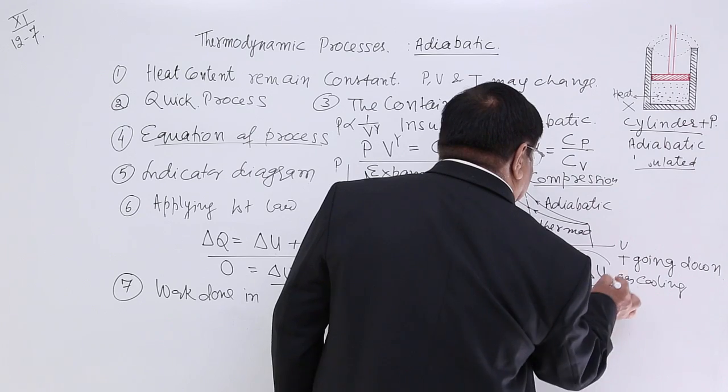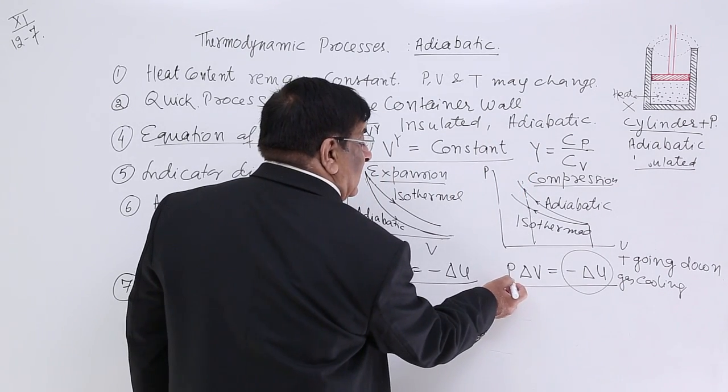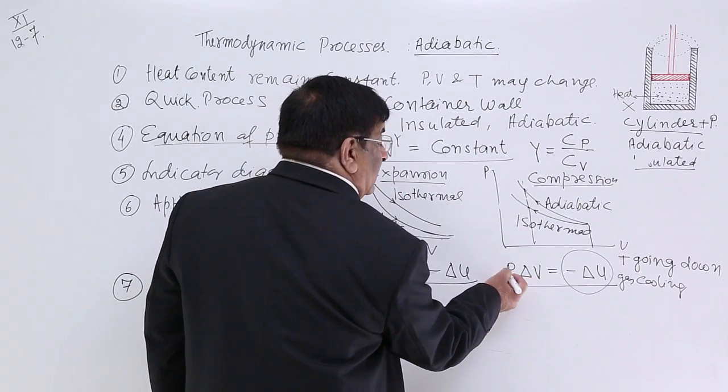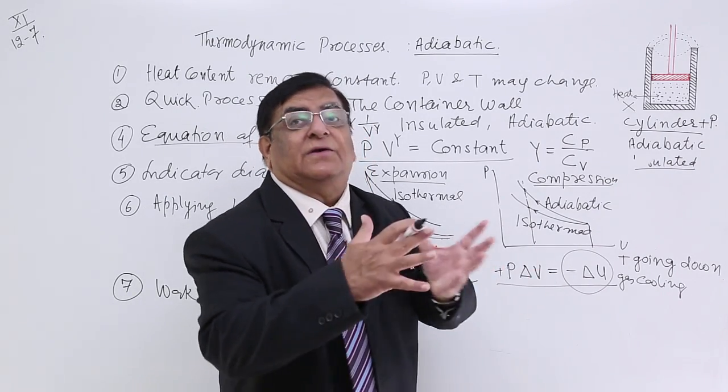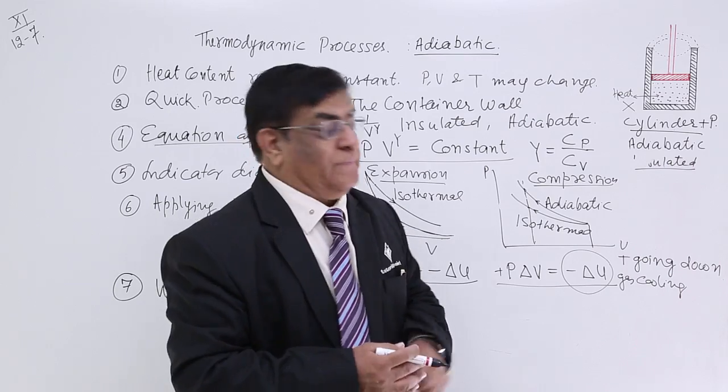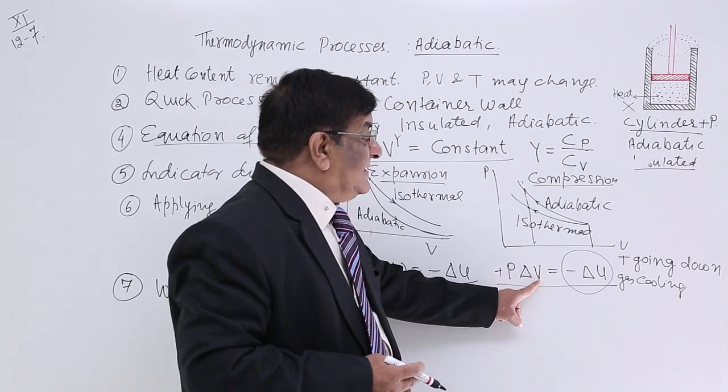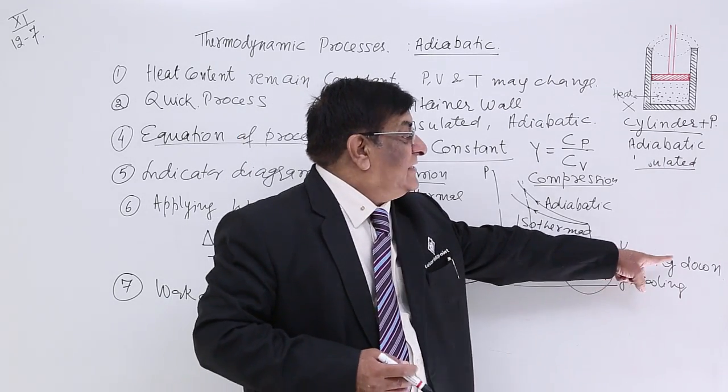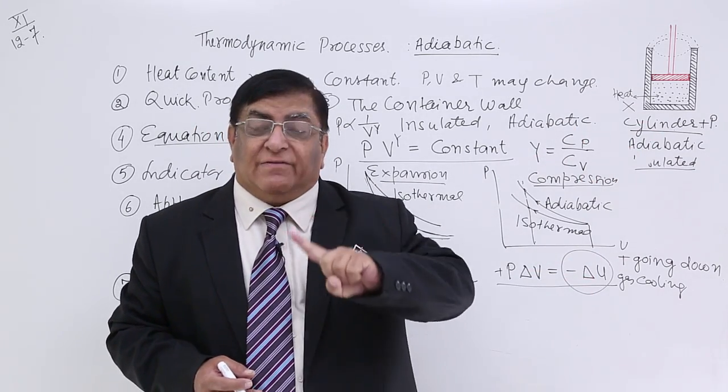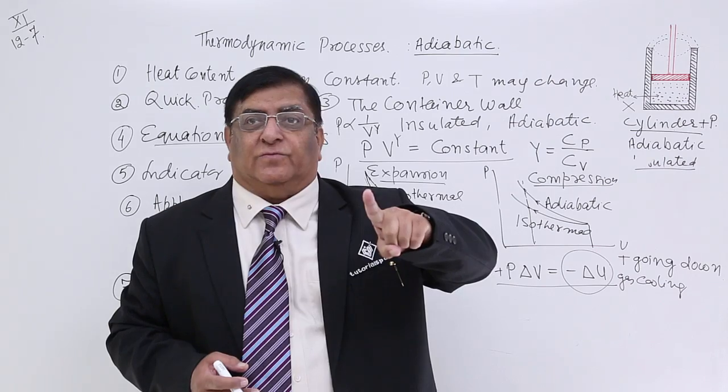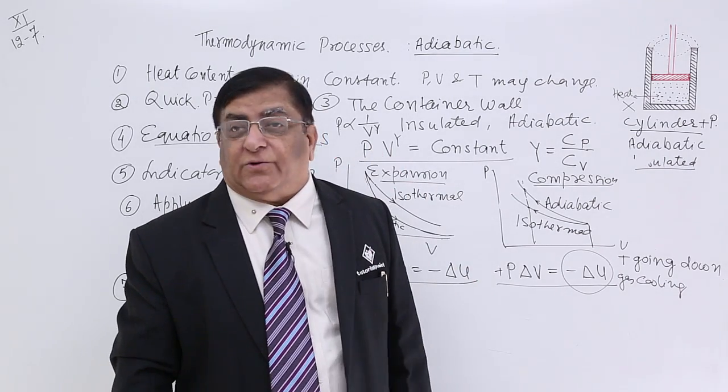What, when this happens, when there is a P into delta V, positive. Positive delta V is what? Increase in the volume. Whenever there is an increase in the volume, the temperature goes down in adiabatic process. Whenever there is increase in the volume, temperature goes down. Want to see this?